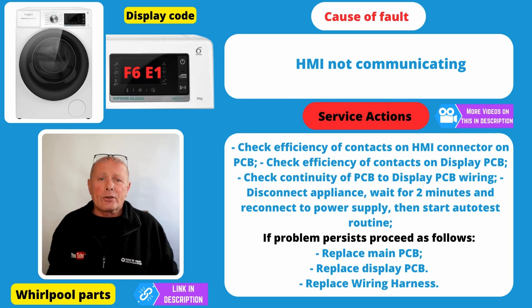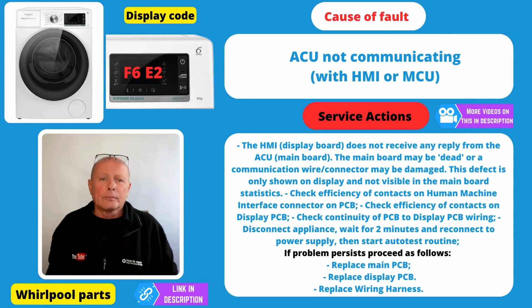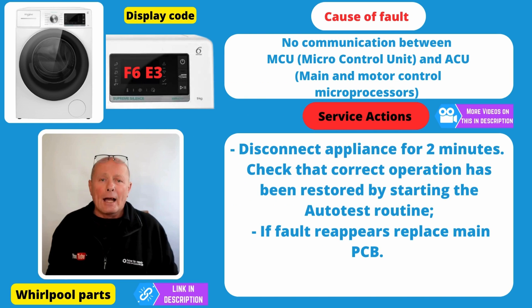Error Code F6E1 is a communications fault. This is usually due to bad connections or a corrupted circuit board, either on the display board or on the main board. Error Code F6E2 is again a communications problem — bad connections or corrupted circuit board. F6E3 error code is either a communications fault in the cabling going between the boards, or it is a problem with the actual circuit board itself, which may be corrupted and need replacing.